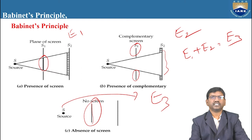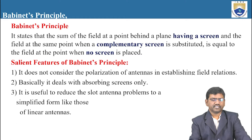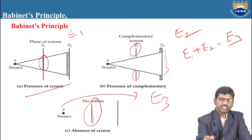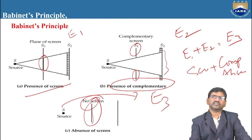This is Babinet's principle statement: the sum of the field at a point behind a plane having a screen, and the field at the same point when a complementary screen is substituted, is equal to the field at the point when no screen is placed. So the field in the presence of the screen plus the field in the presence of the complementary screen is equivalent to the field in the absence of the screen.